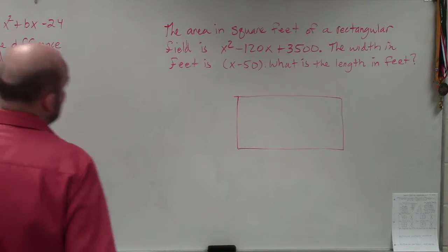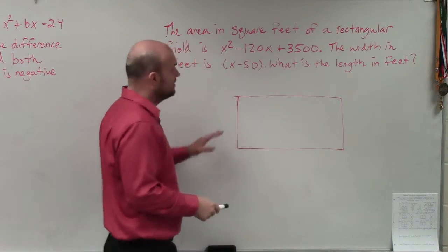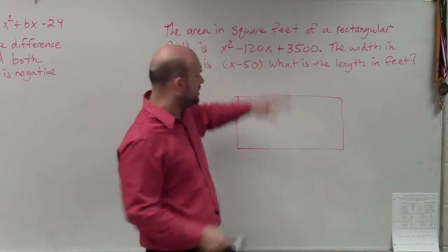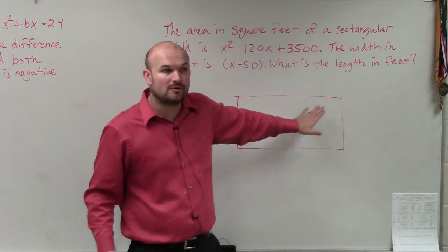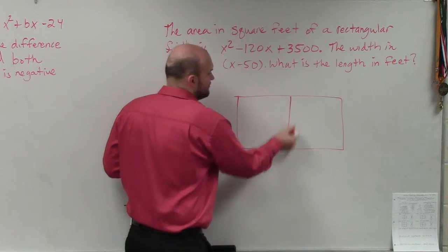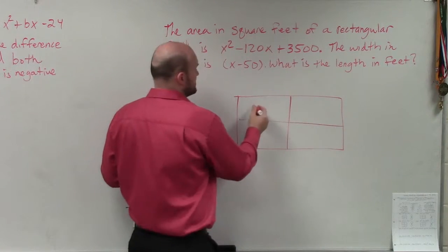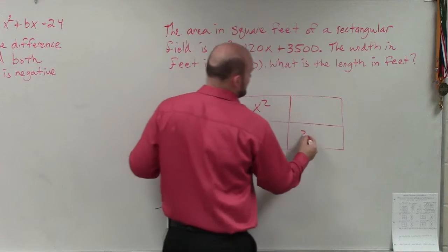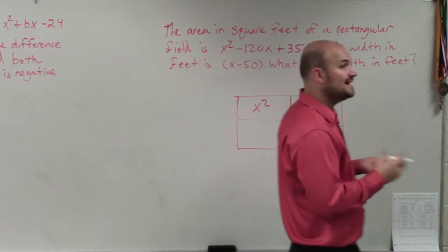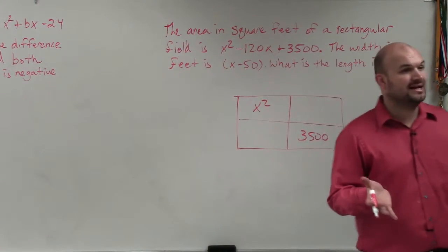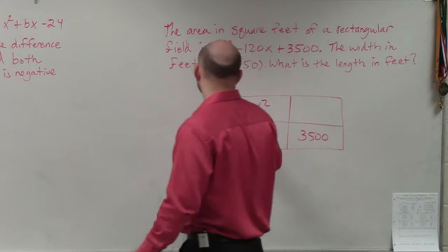If I'm going to represent this rectangle field, rather than plugging it in as three different points, I know that the trinomial — to factor this into length and width — I'm going to use four terms. So I'm going to say x squared and 3,500. What's nice about this problem is they actually told us what one of the widths is, which is x minus 50.